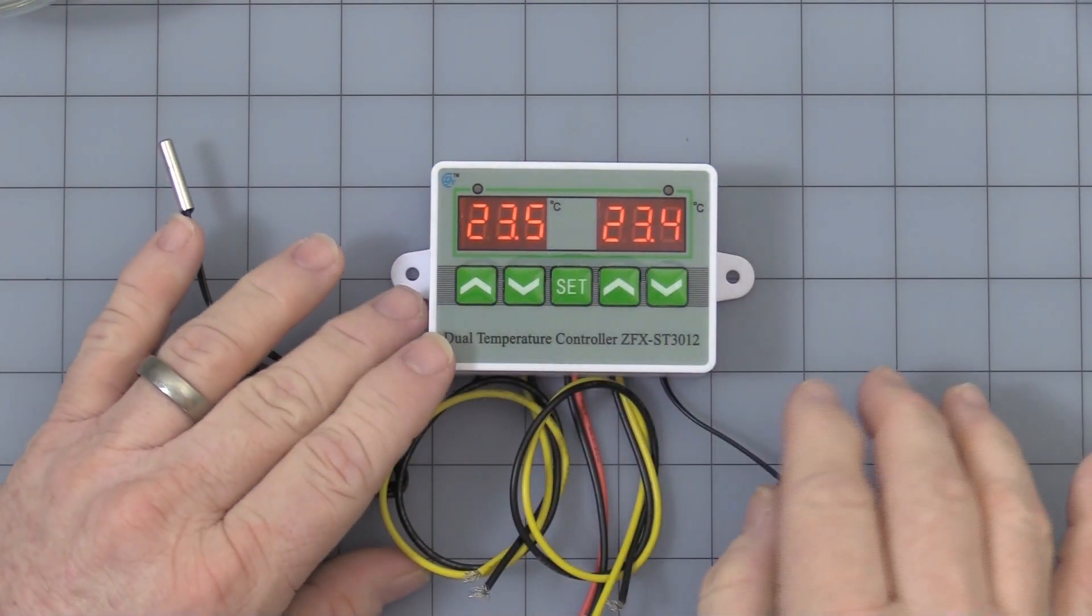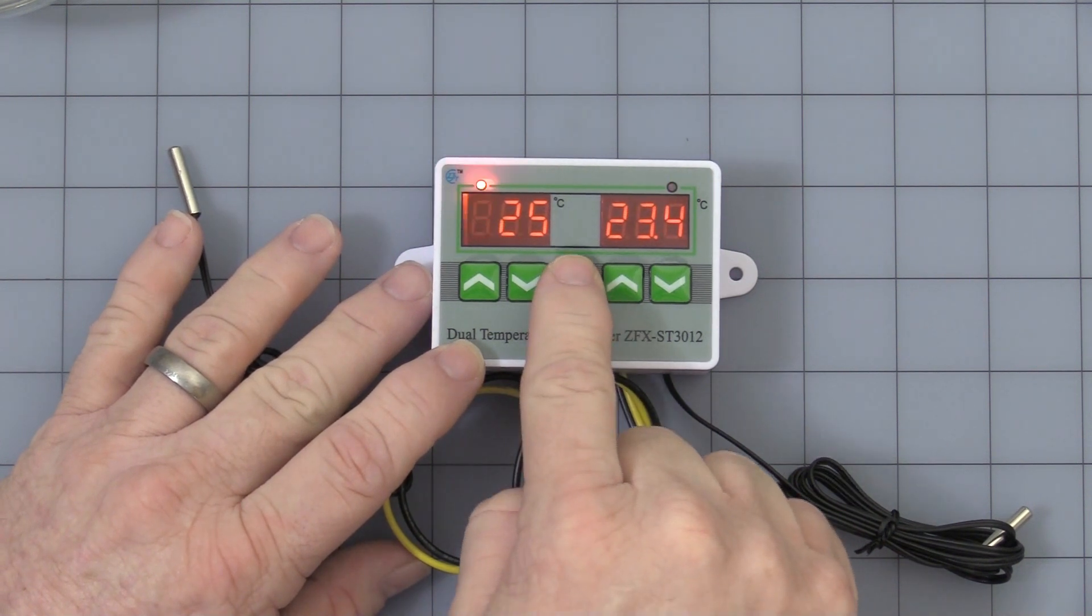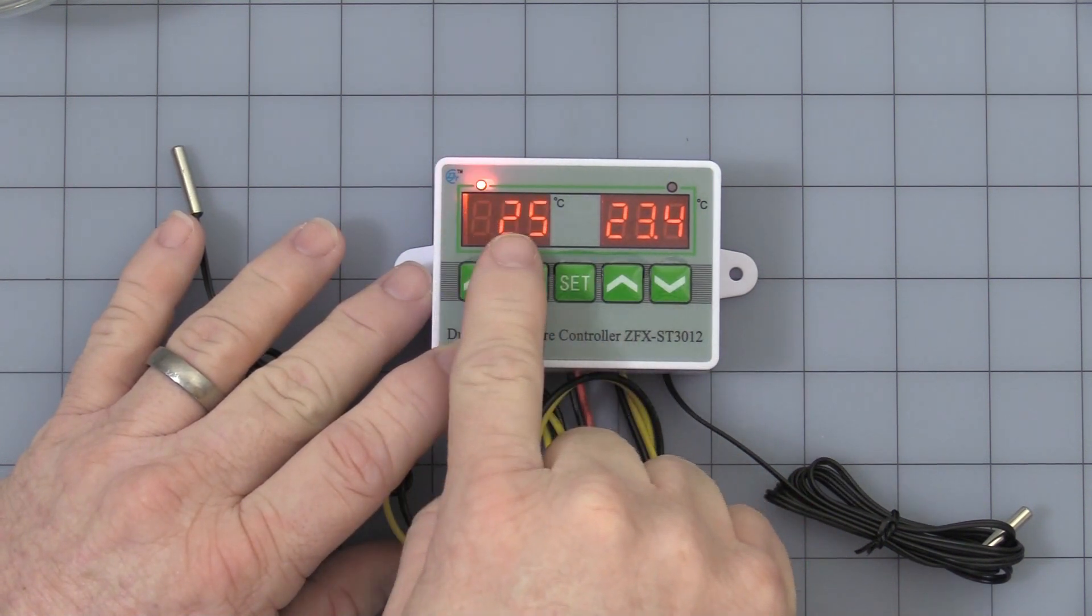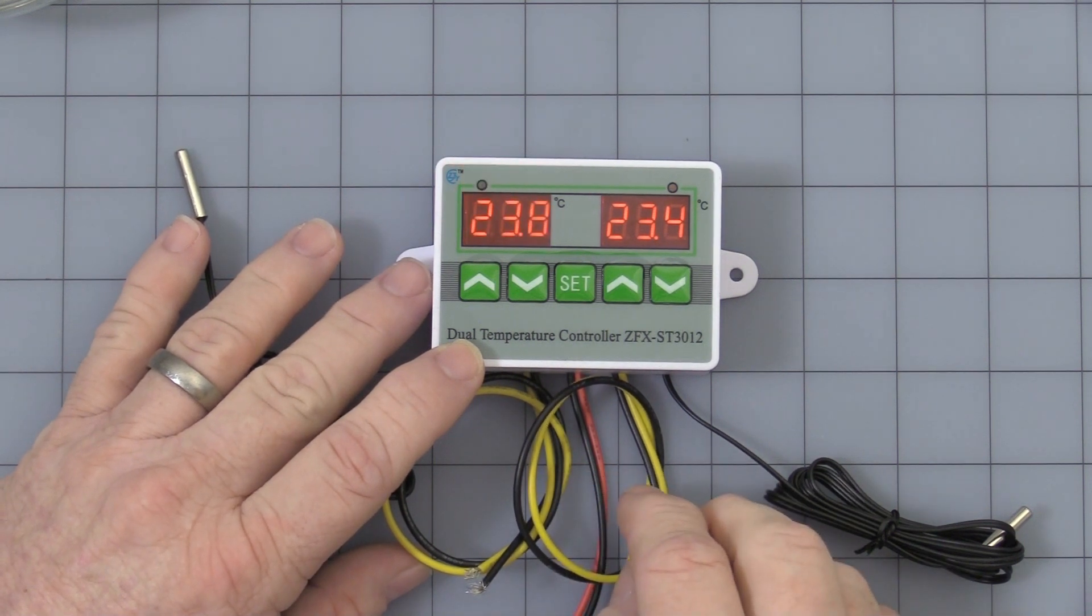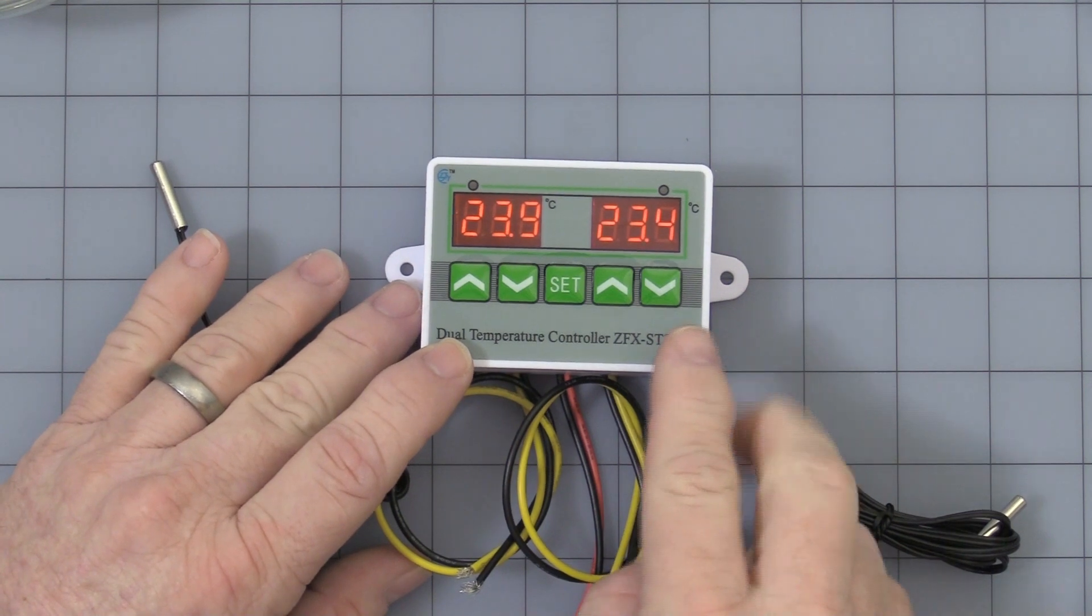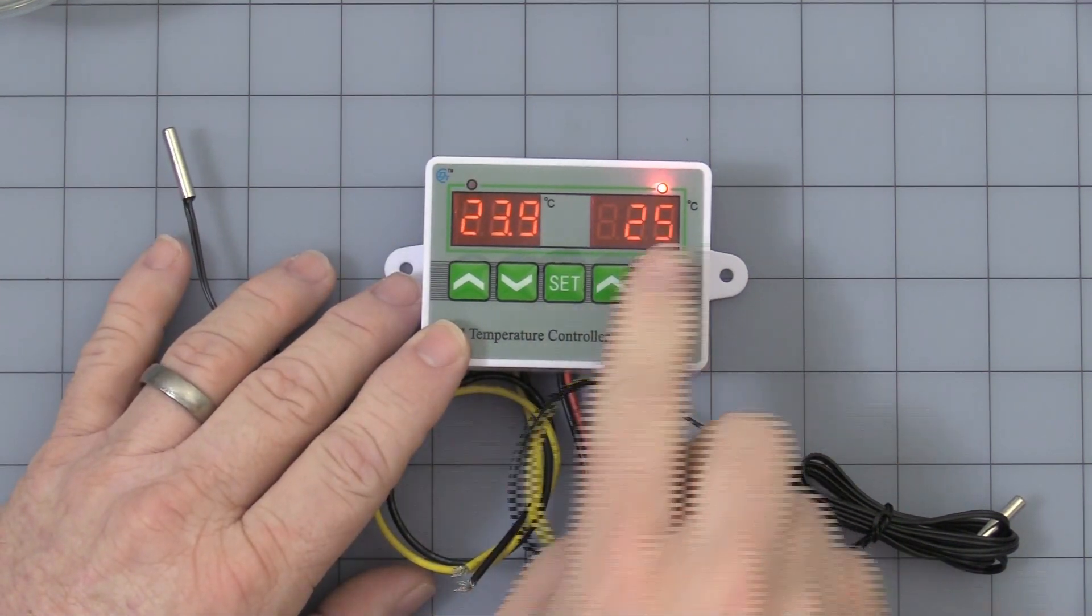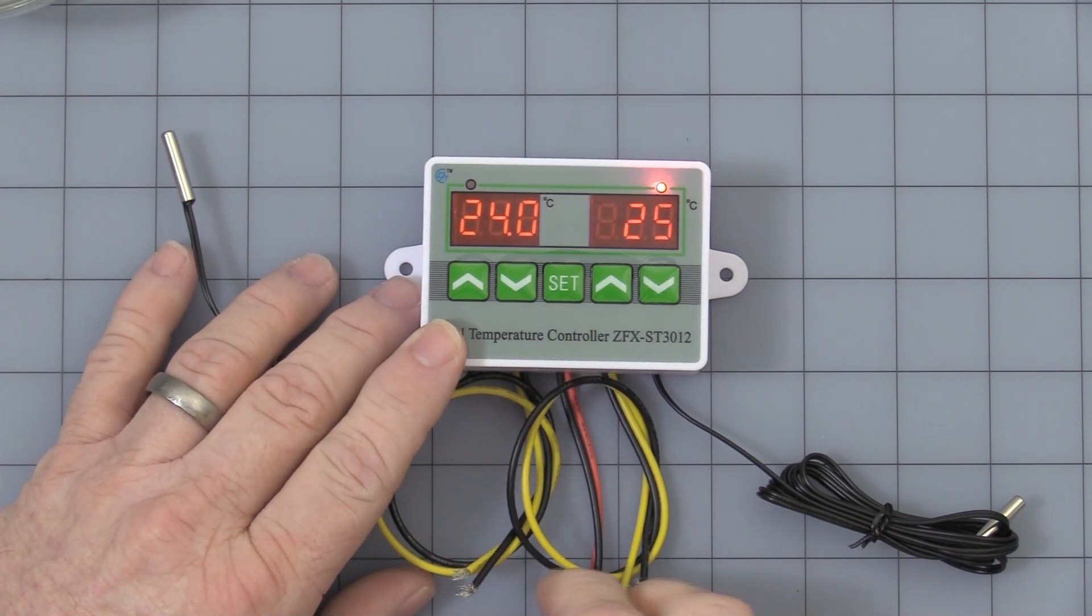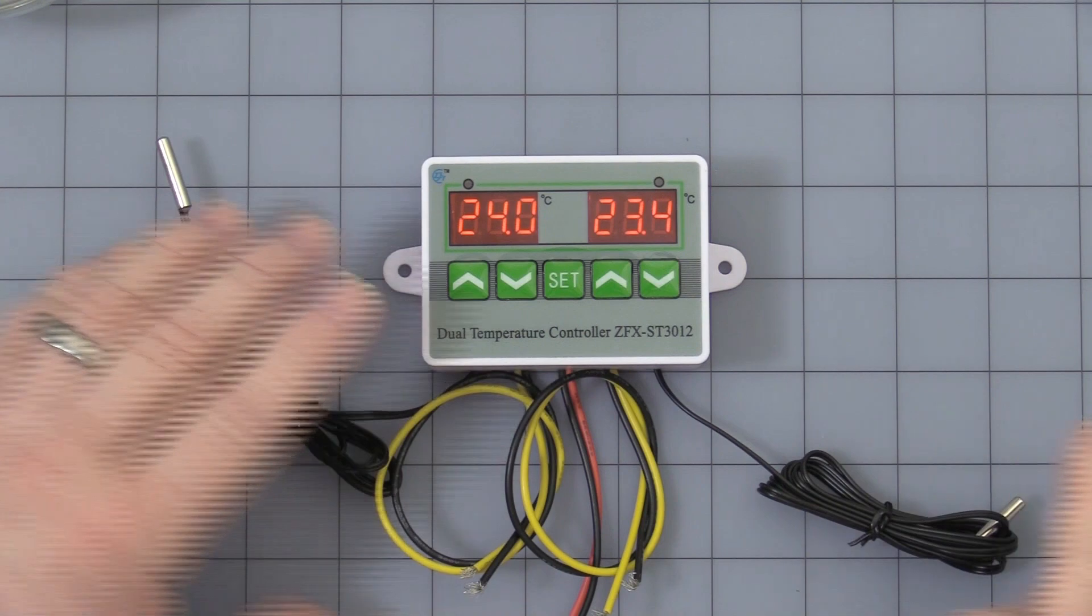There's a display on your left and your right and a set button in the middle. First time you press the button, this side lights. It comes factory set at 25 degrees Celsius. It is Celsius only. Leave it alone for a few seconds and it goes back into operation mode. Press once, the left side lights up. Press it again, the right side will light up. Leave it alone for a moment and it goes back to display.